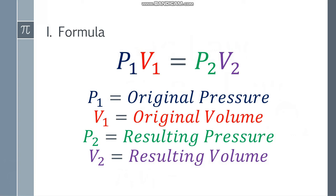Let's start with the formula. We have P1 V1 is equal to P2 V2. In this law, we only need the pressure and the volume — we don't need temperature. P1 is the original pressure, V1 is the original volume, P2 is the resulting pressure, and V2 is the resulting volume.